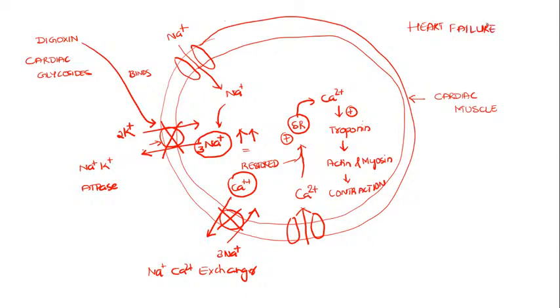So this was the mechanism of action of digoxin, where you need to remember: digoxin, by inhibiting the sodium-potassium ATPase pump, causes the contraction of the cardiac muscle fibers.